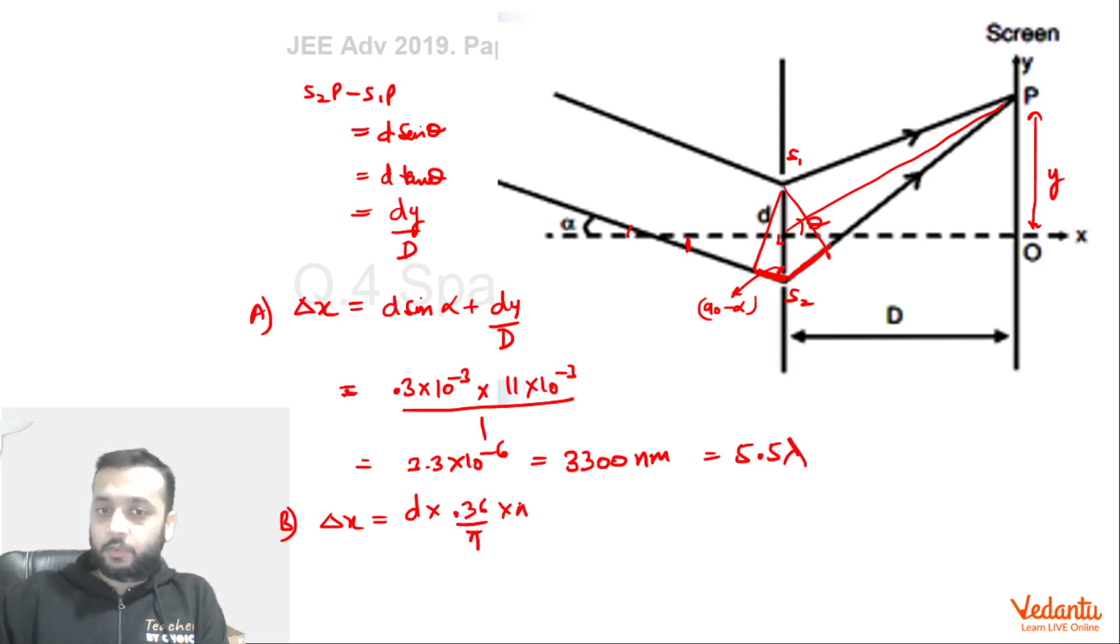So for option B, we can say that delta x will be d into alpha and alpha is 0.36 by pi degrees. So we have to convert that into radians, which we will get by multiplying by pi by 180. So this is d into alpha, sin alpha I have to convert into alpha, plus d y by D. d y by D will not change, this is 3300 nanometers.